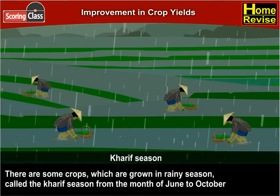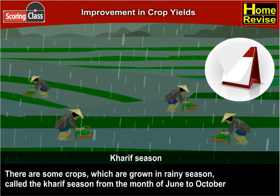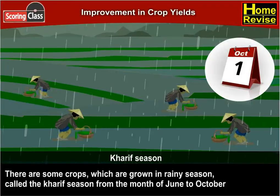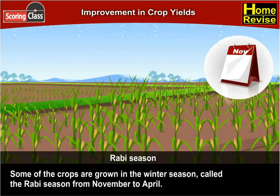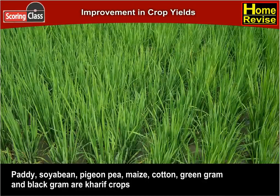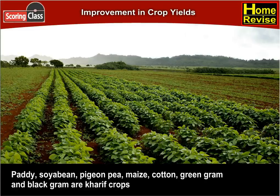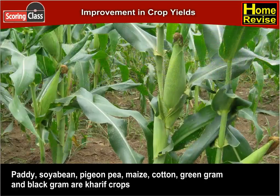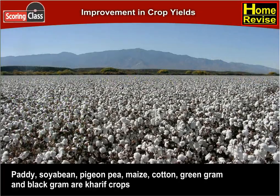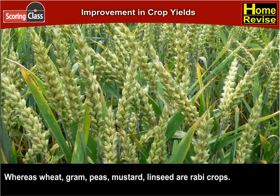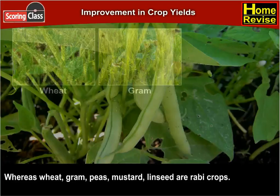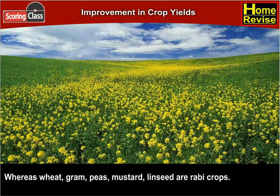There are some crops grown in the rainy season, called the Kharif season, from June to October. Some crops are grown in the winter season, called the Rabi season, from November to April. Paddy, soybean, pigeon pea, maize, cotton, green gram, and black gram are Kharif crops, whereas wheat, gram, peas, mustard, and linseed are Rabi crops.